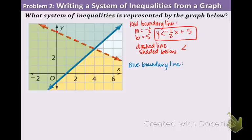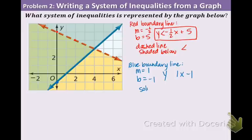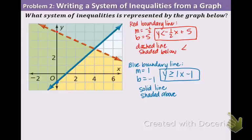Now let's look at the blue line. It has a positive slope — rising from left to right. The y-intercept is negative 1, and the slope is 1 over 1, so slope equals 1. The equation is y equals 1x minus 1. It is a solid line shaded above, so we use greater than or equal to. You can tell the shading direction by the green overlap on the left — blue above mixed with yellow below gives green. So our second inequality is y is greater than or equal to x minus 1.